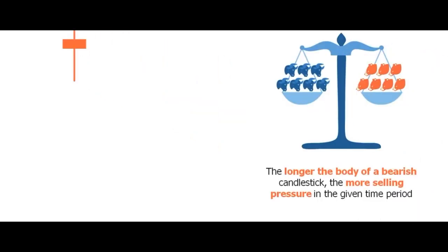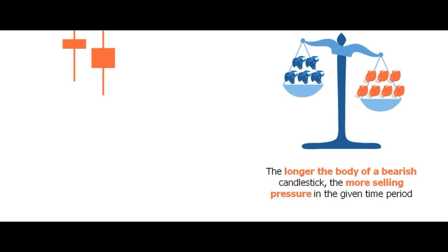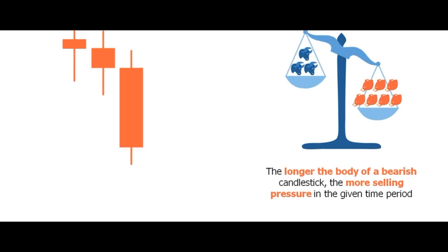When the body of the candlestick is bearish but small, there is a relative equilibrium between the bulls and the bears - we can see that because the candle is bearish, there is slightly more selling pressure than buying pressure. As more bears enter the market, the selling pressure increases and the body of the bearish candles become longer under this added selling pressure, because the extra selling pressure is moving the price further down. Therefore, the longer the body of a bearish candlestick, the more selling pressure there is.